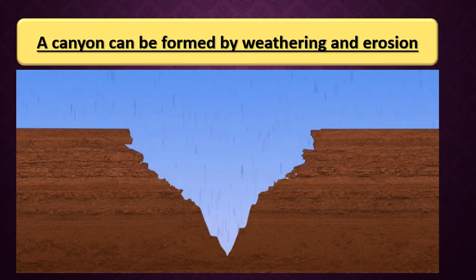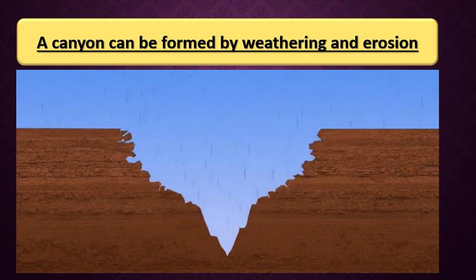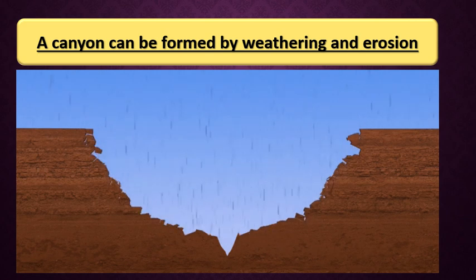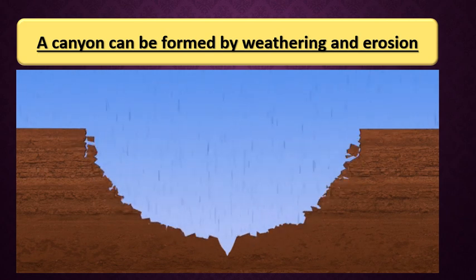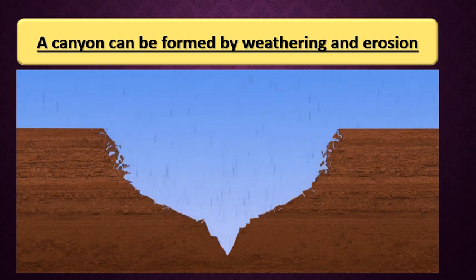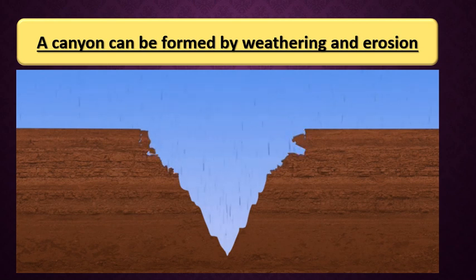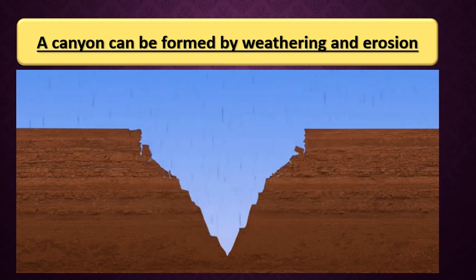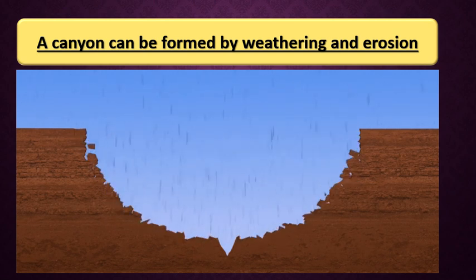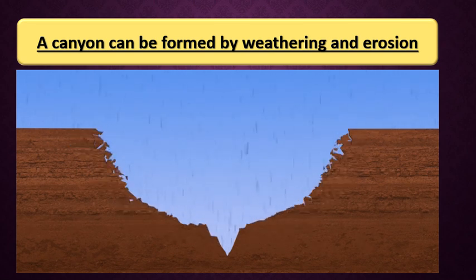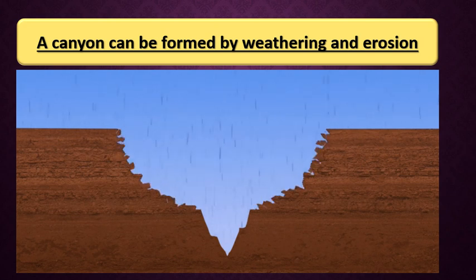The water dissolves the minerals inside the rock. If the water dissolves the minerals inside the rock, the rock becomes weak, so it can break down easily. Running water on the land can dissolve the minerals and make weathering. After breaking down of rocks, we have sediments. The sediments will move from one place to another by the action of water. Erosion can be caused by three ways: water, wind, and gravity.